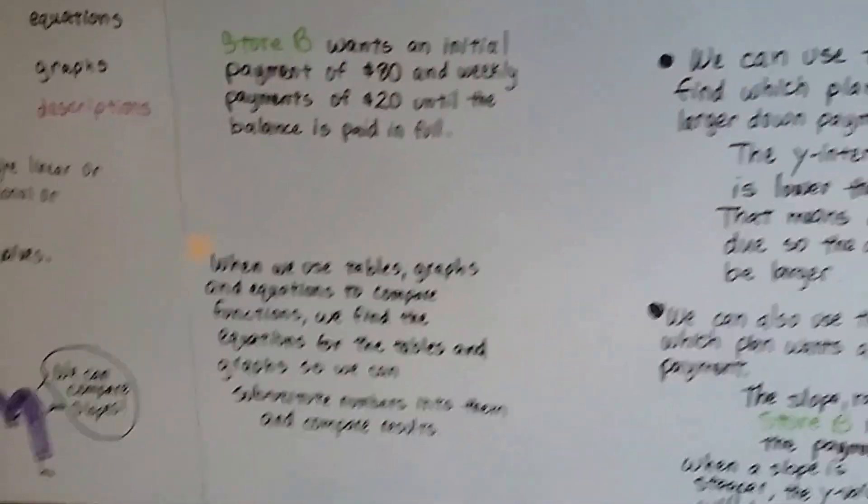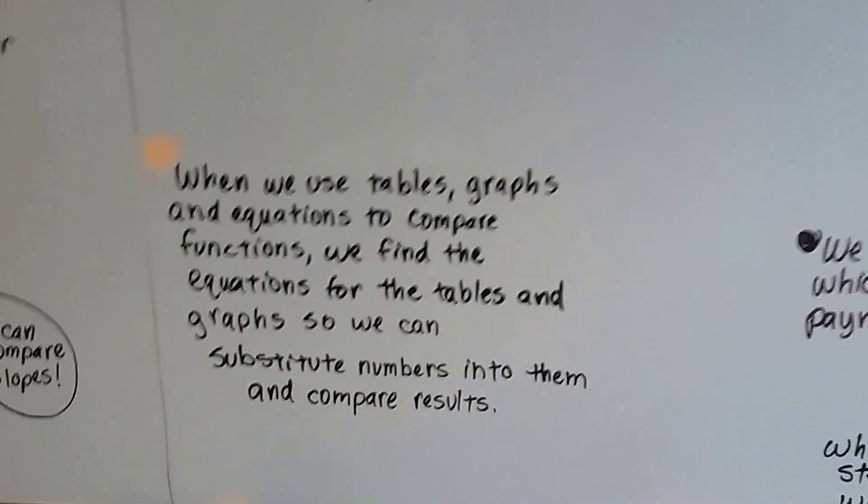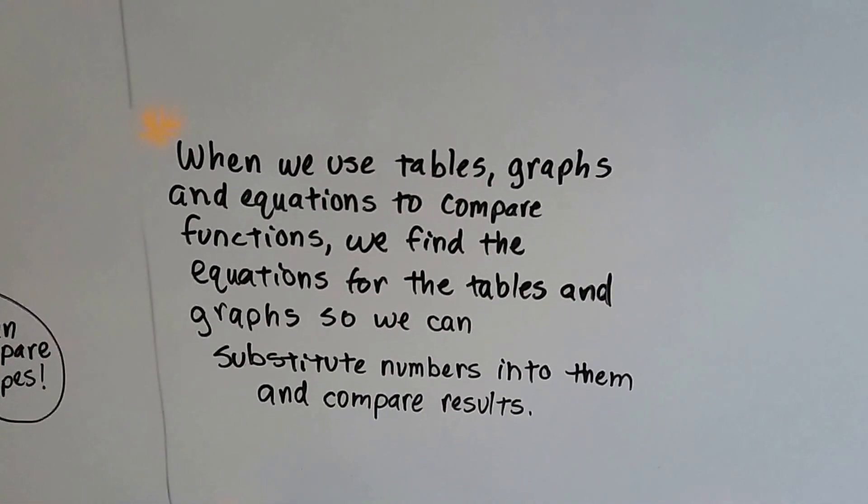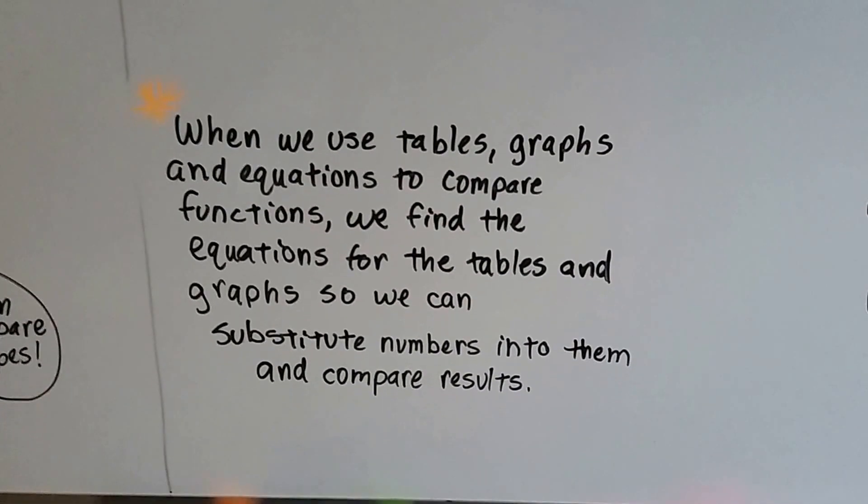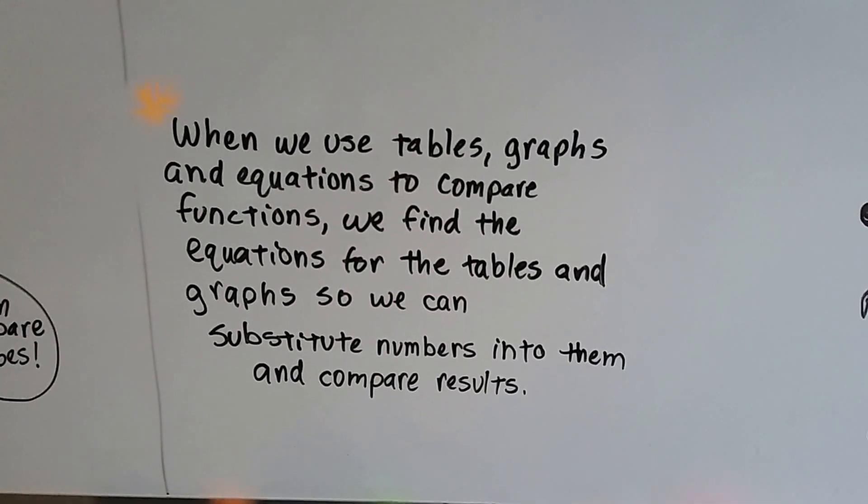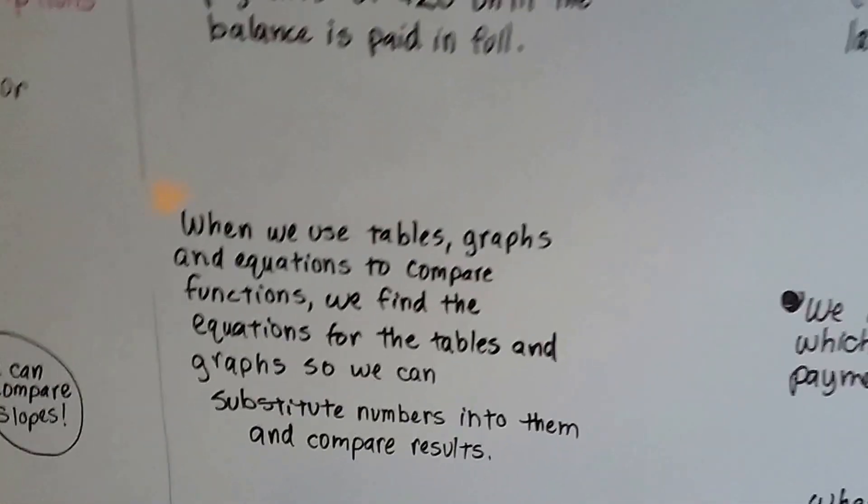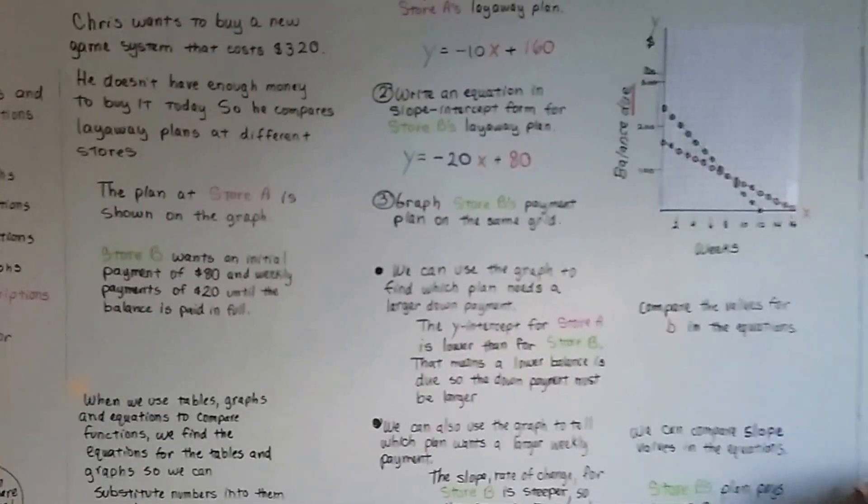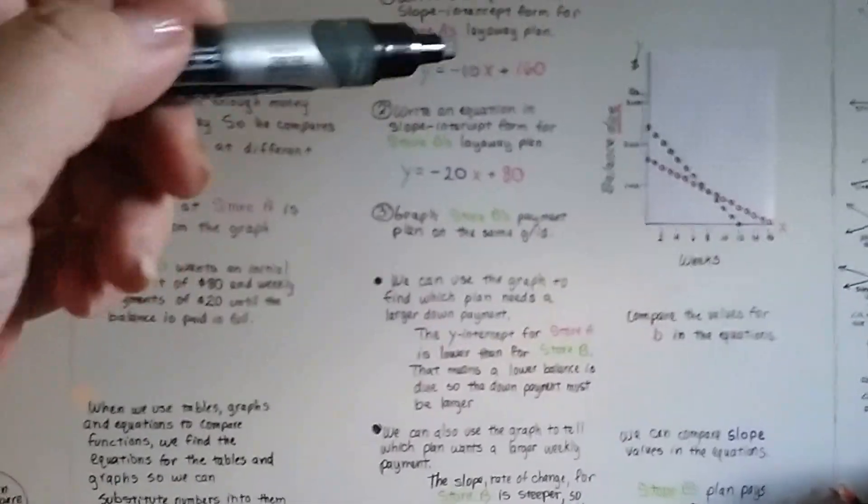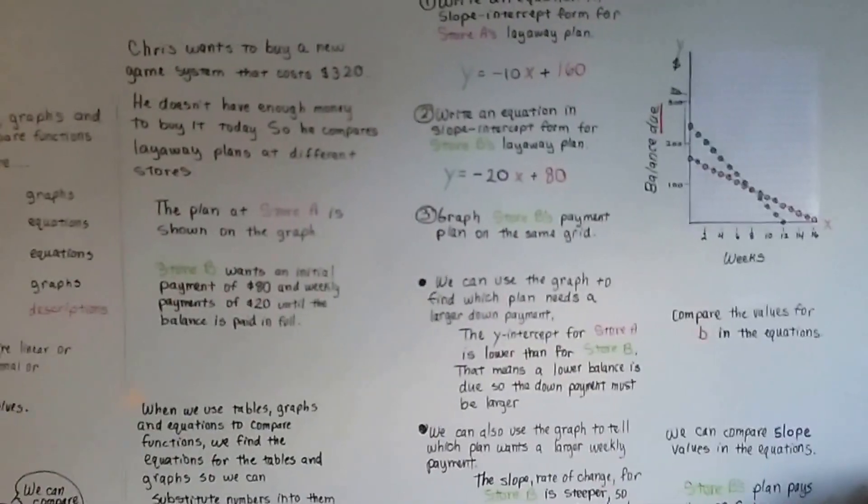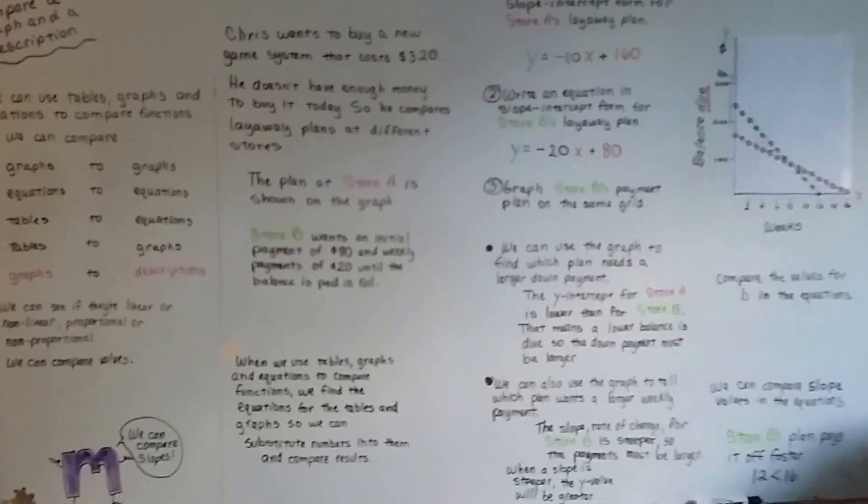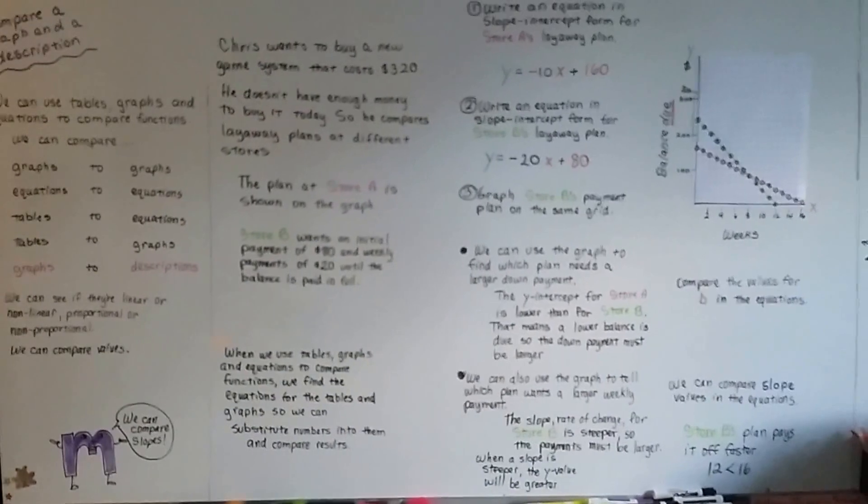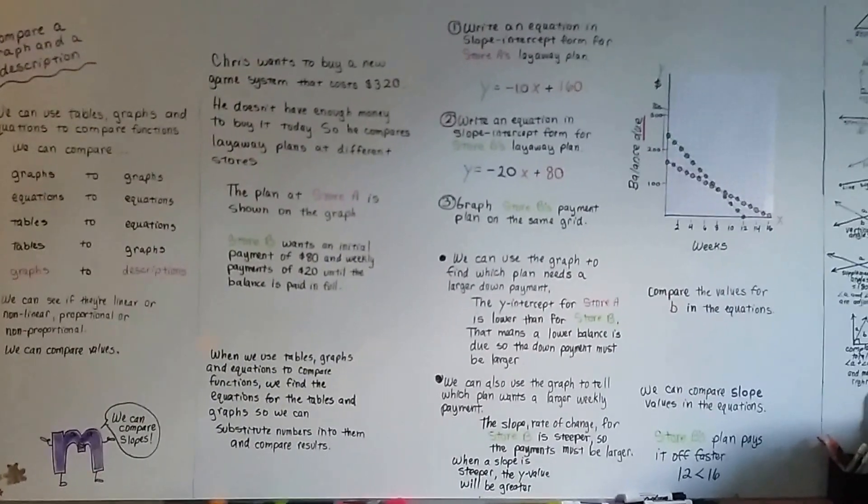When we use tables, graphs, and equations to compare functions, we find the equations for the tables and the graphs, so we can substitute numbers into them and compare results. So if we wanted to find the y-intercept B or something like that, like we did in the last couple of videos for the tables and the graphs, that helps us. Then we can compare the values. Then we can use those numbers and substitute them in to compare the results.